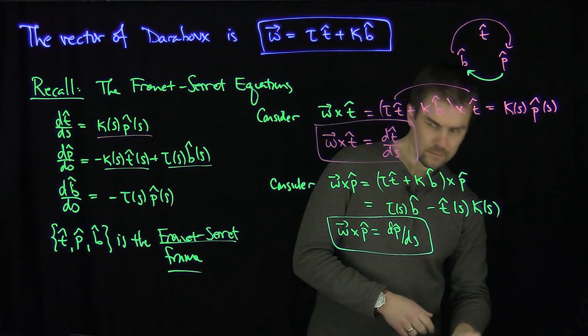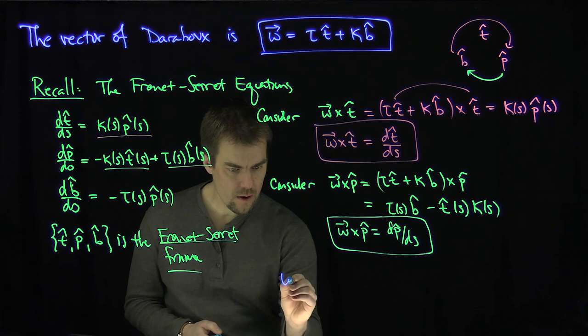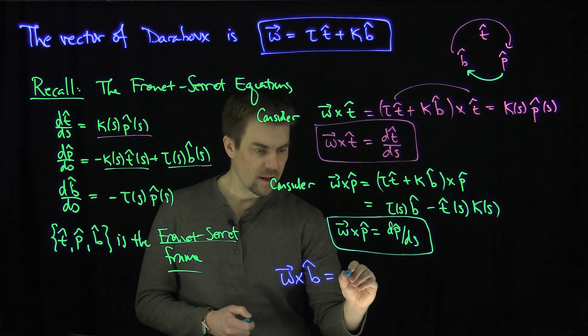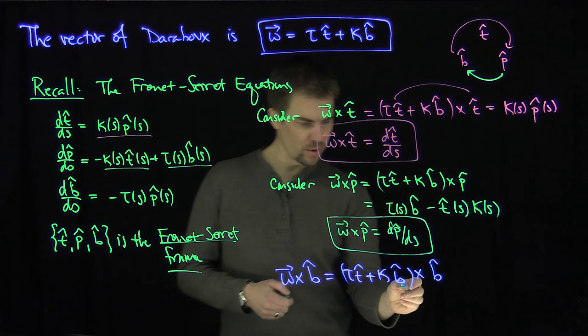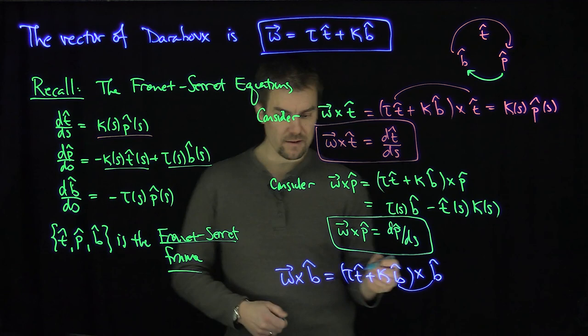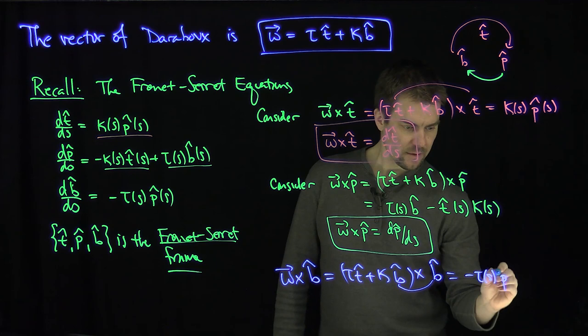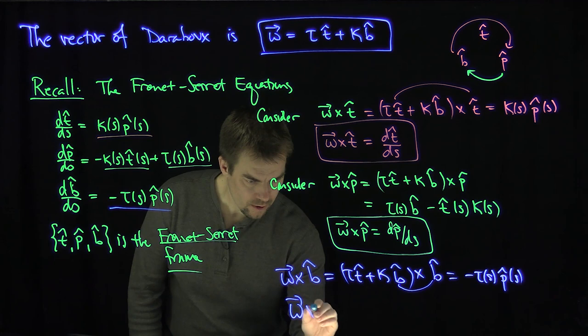Finally, let's consider the Darboux vector cross b̂. That is τ t̂ + κ b̂, crossed with b̂. The easy one: b̂ × b̂ = 0. And t̂ × b̂ = −p̂, so this gives −τ(s) p̂(s). Lo and behold, that is exactly db̂/ds. So the Darboux vector cross b̂ equals db̂/ds.